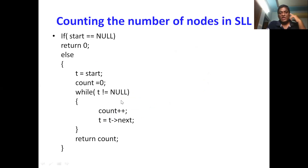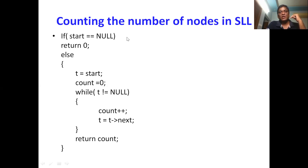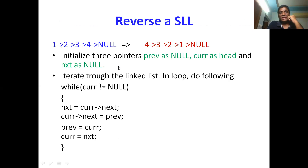Counting the nodes is similar to traversal. Instead of the printf statement, perform count++ — initialize count = 0, then while t != null, do count++ and t = t->next. At the end of the loop you get the total number of nodes. If start equals null, return 0 since there are no nodes in the singly linked list.